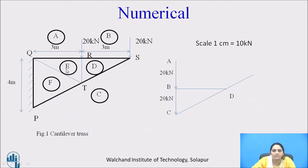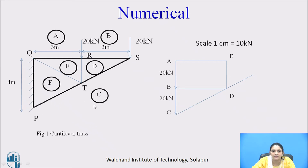Now we will determine space E. Between space D and E there is a vertical member, and between space A and E there is a horizontal member, so we draw a horizontal line and a vertical line; their intersection is space E. Finally, for space F: there is a member QT between spaces E and F, and a member PT between space C and F. Drawing parallel lines from C and E gives the intersection point as space F. The force diagram is now complete.